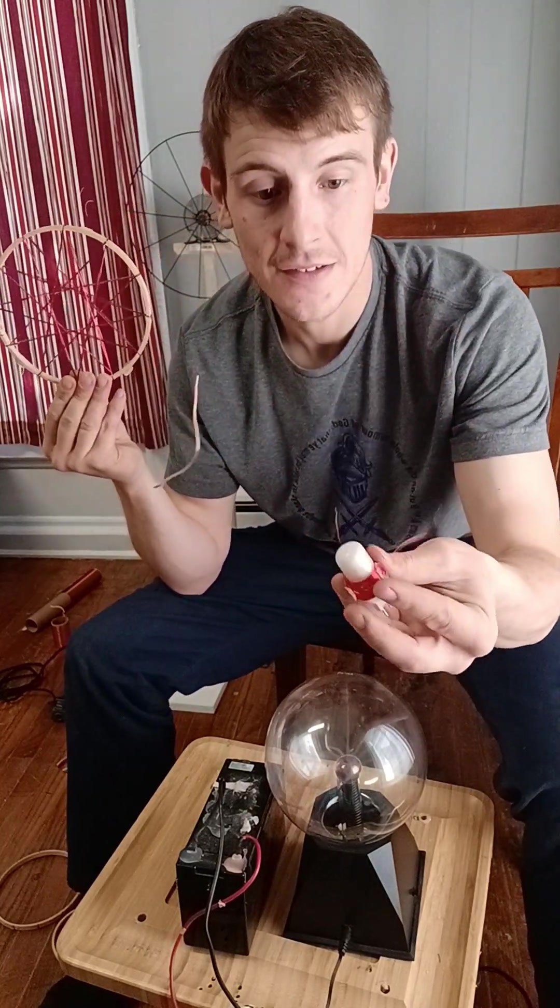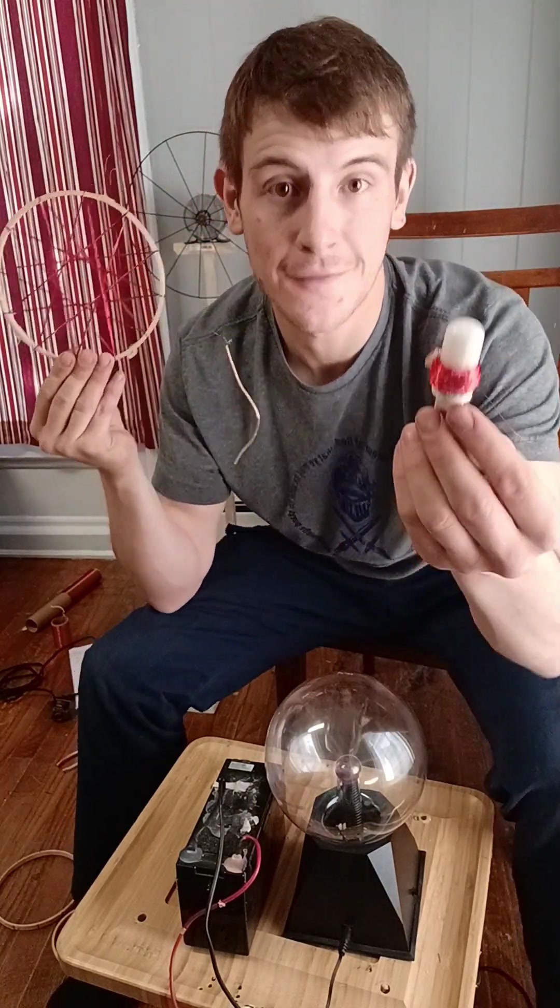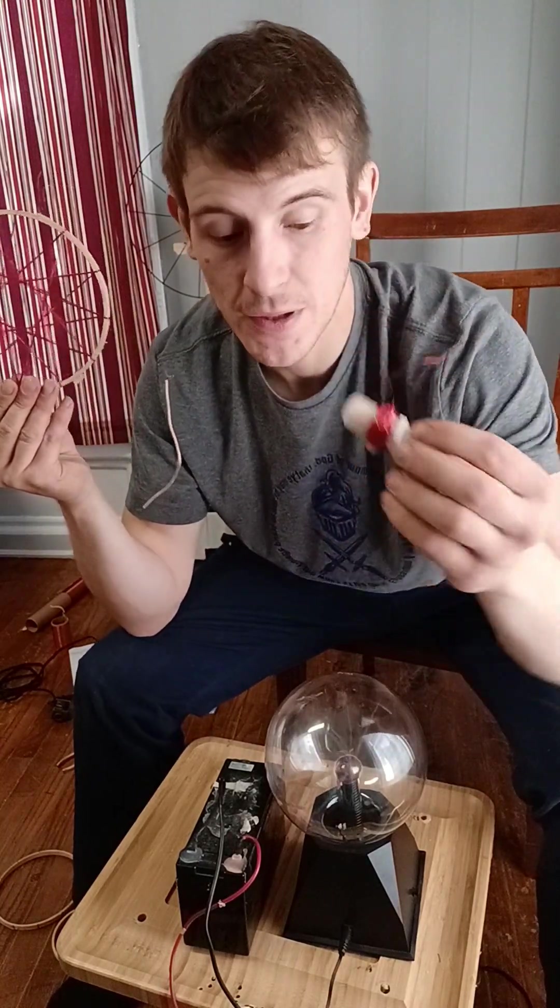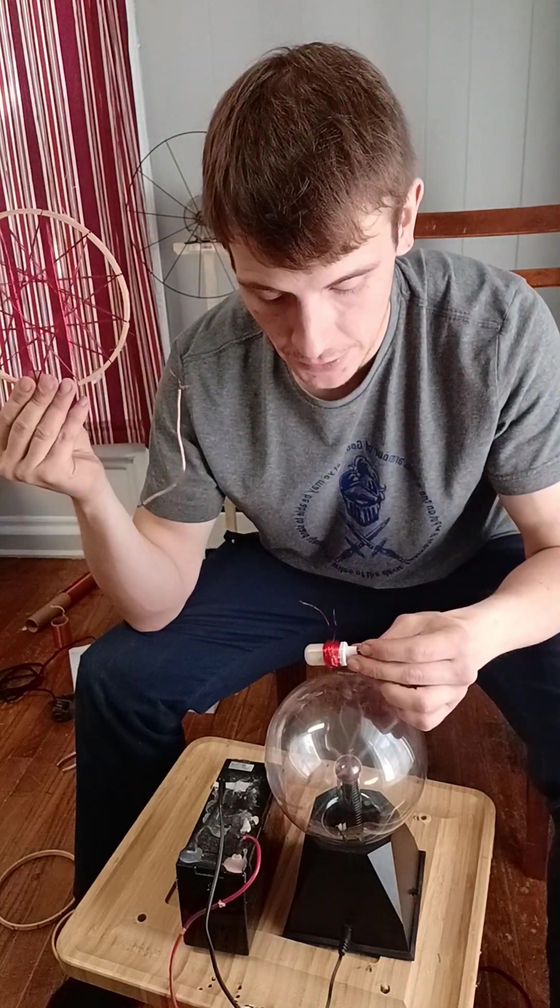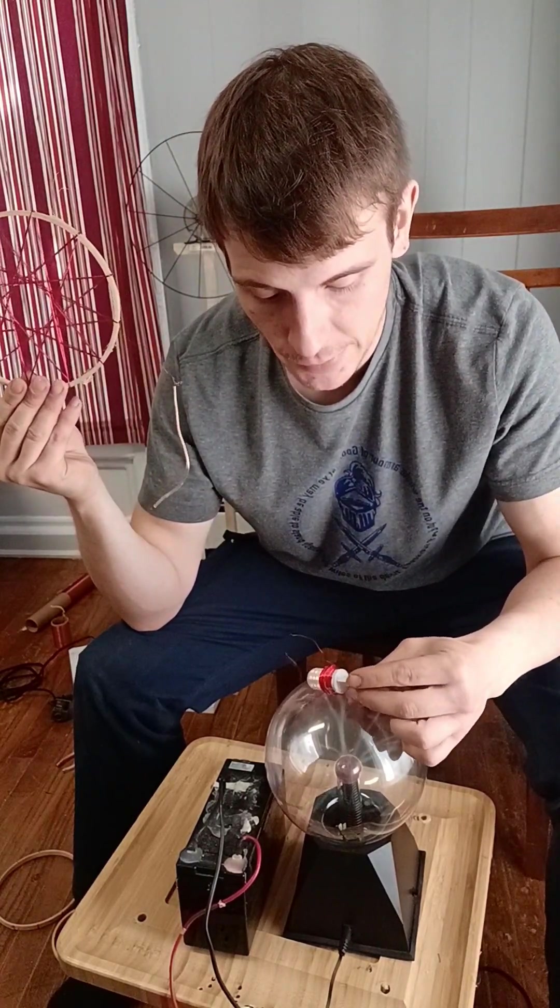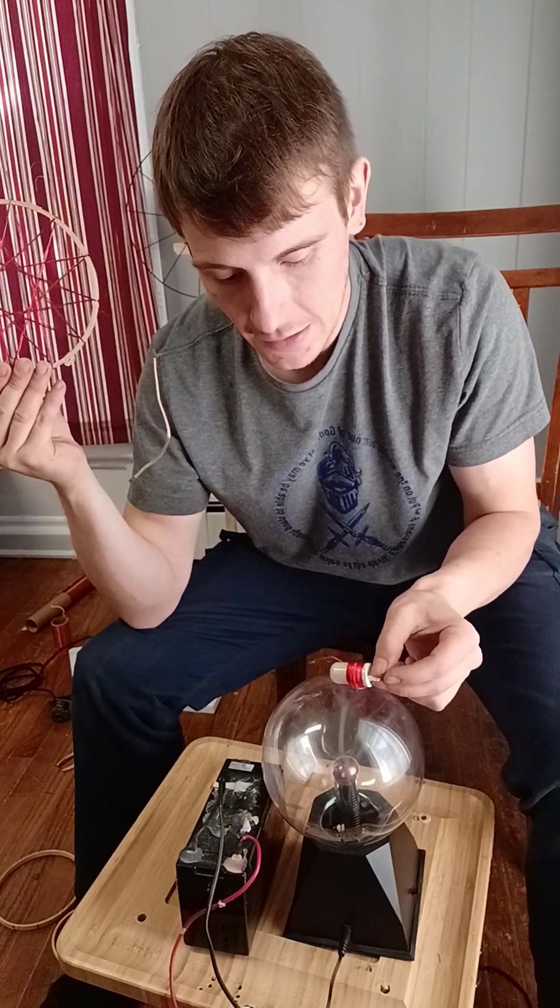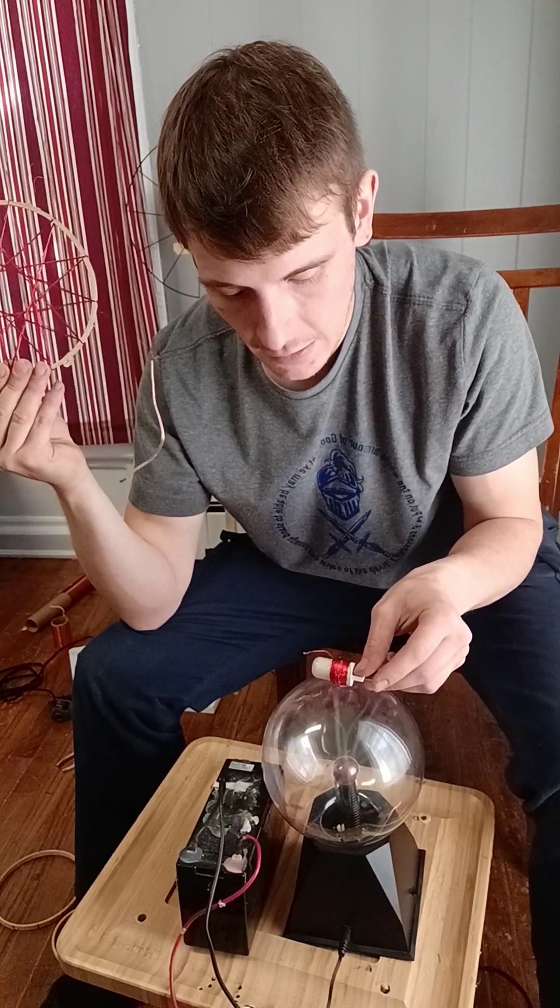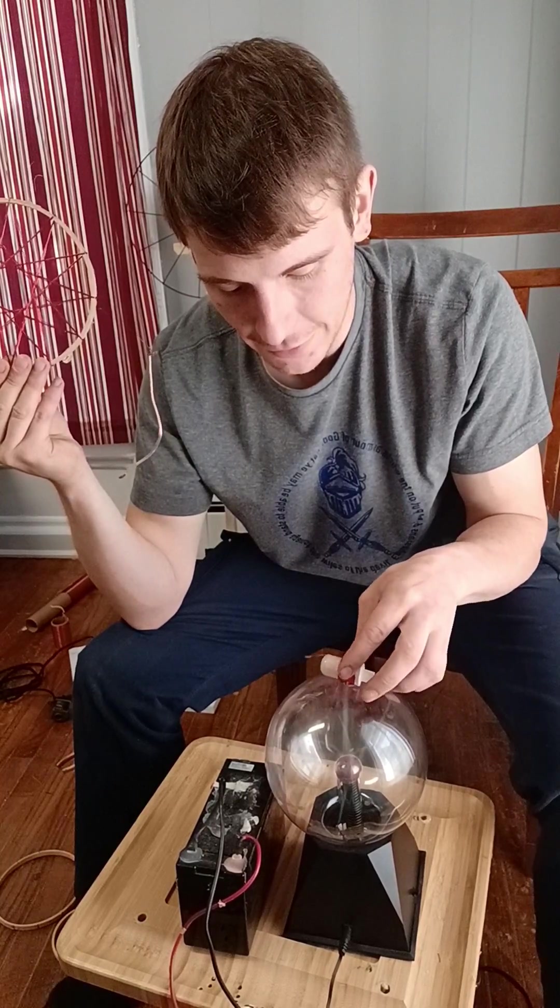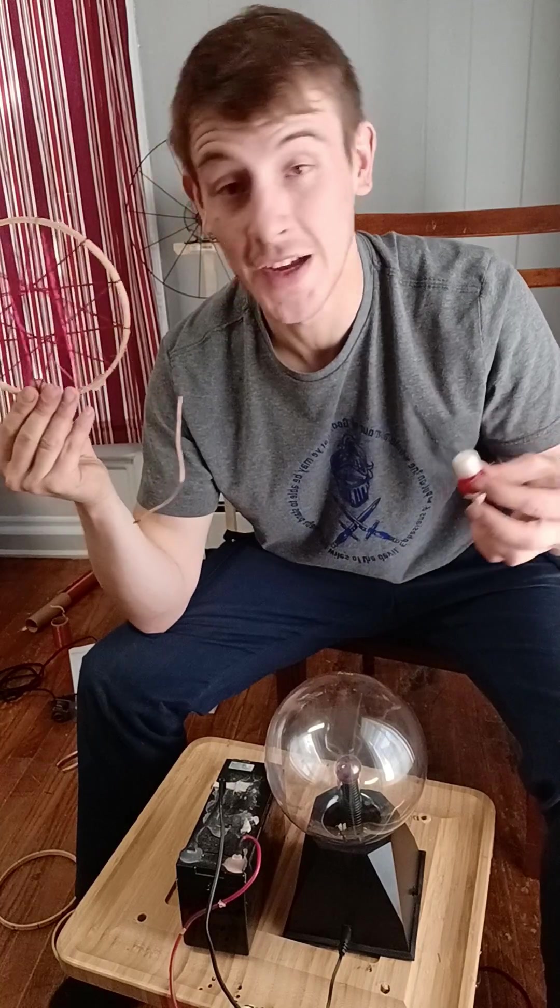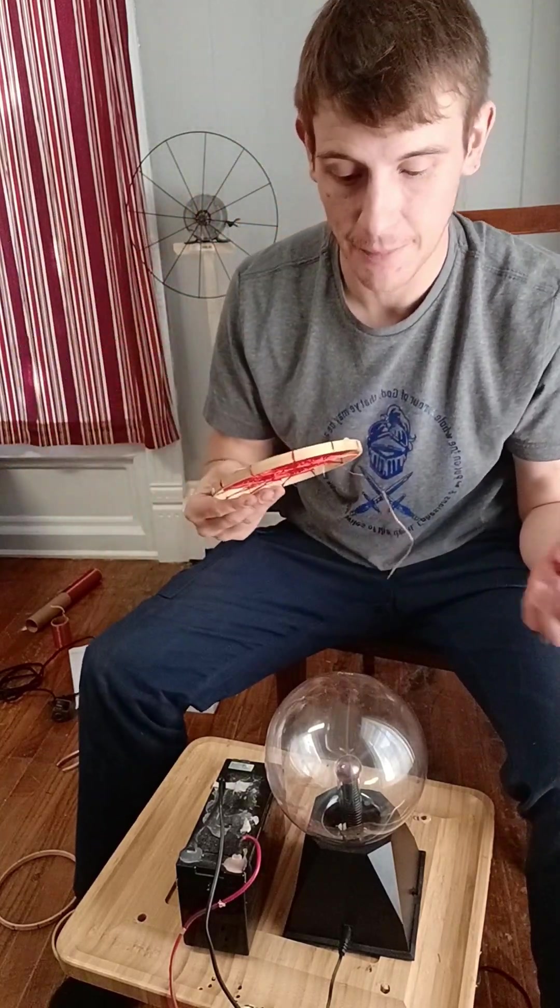This light bulb here is a little four and a half watt light bulb. You can get these at Home Depot. I want to show you what it does when I put it up to the plasma bulb and I try to get it to turn on. As you can tell I have a tiny little bit of electricity there powering the bulb.